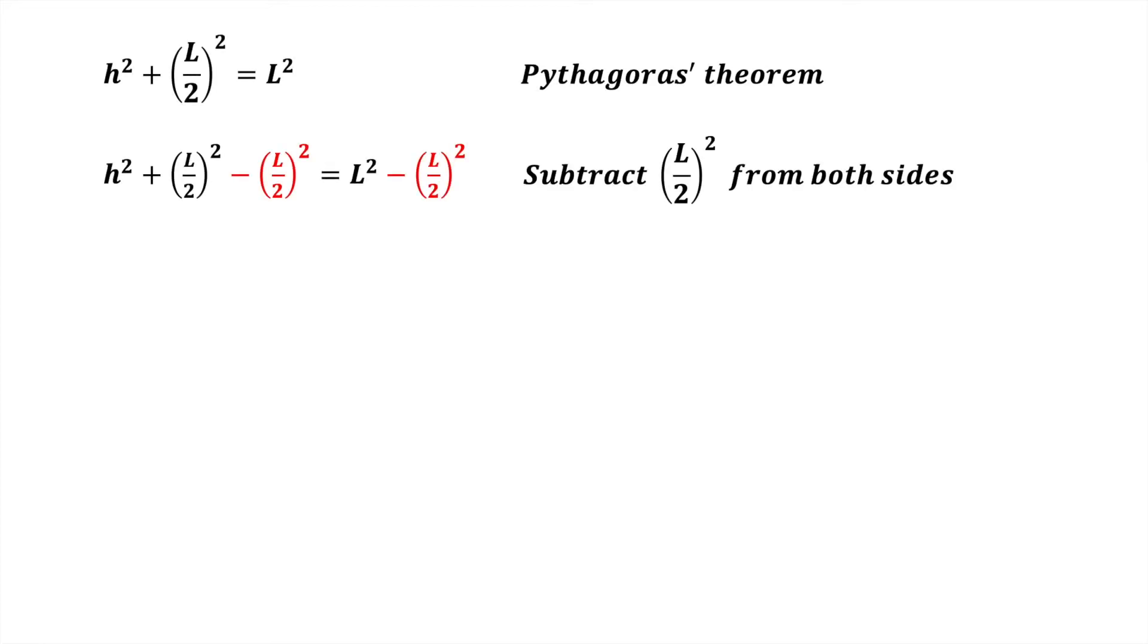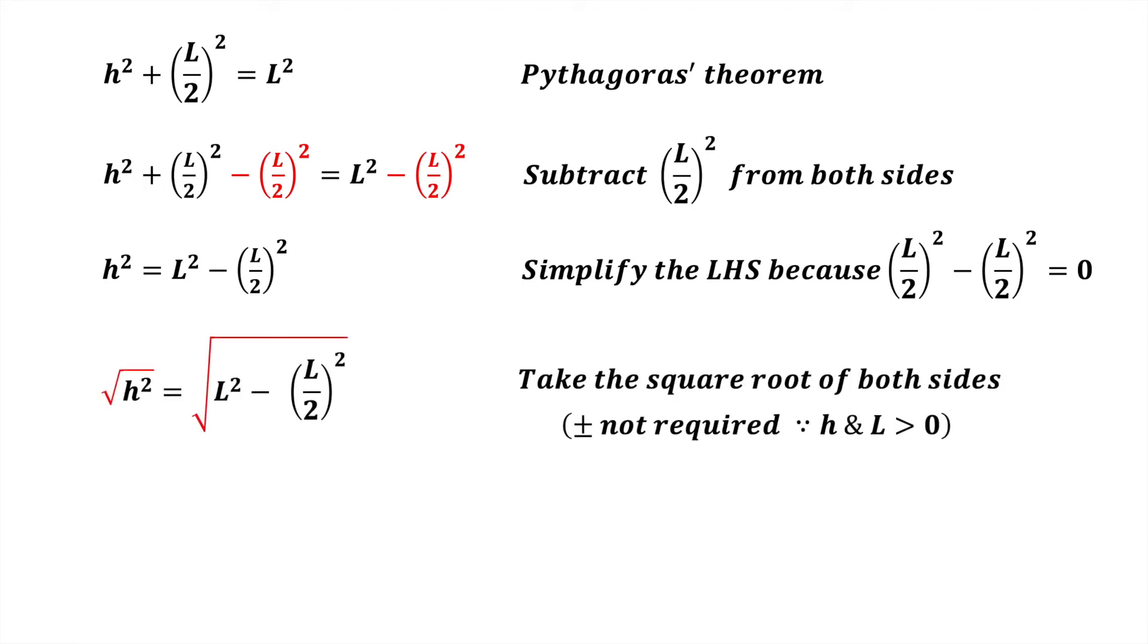First, we subtract L divided by 2 all squared from both sides. Simplify the left-hand side because L divided by 2 all squared minus itself equals zero. We now take the square root of both sides.